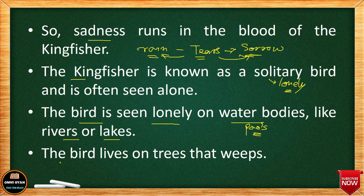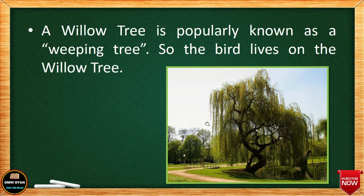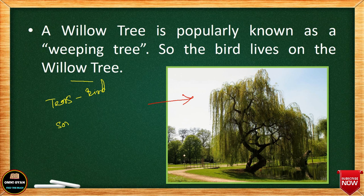The bird lives on trees that weep. You might wonder — is there any tree that weeps? Yes, there is one particular tree known as the weeping tree, or crying tree: the willow tree. The willow tree is popularly known as a weeping tree. I will explain through a picture why the willow tree is called a weeping tree. Because tears run in the blood of the Kingfisher, all elements of sorrow are in this bird.